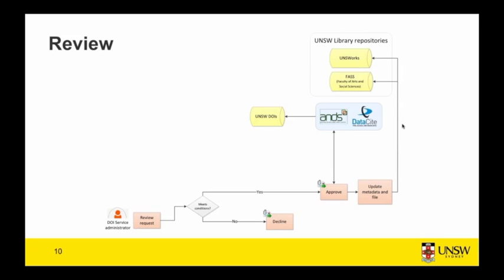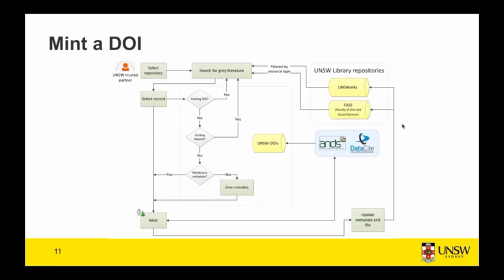If the metadata is missing, they need to enter or confirm it and then submit a request. The second part of the workflow is for a DOI service administrator, which is currently library staff. They go in and review any submitted request, check that it meets the conditions we've outlined, and if it does, it's approved. It goes to the ANDS service, mints the DOI, and emails the requester with the DOI. The administrator then updates the metadata, which is sent back into the repository and displayed on the repository page.